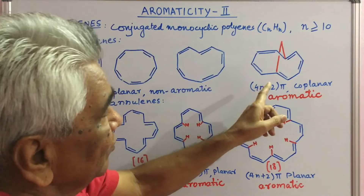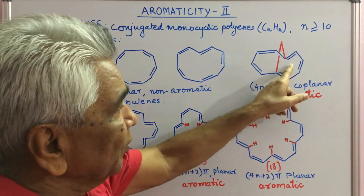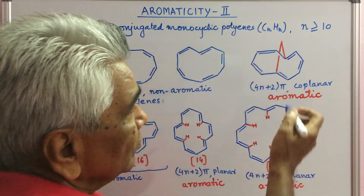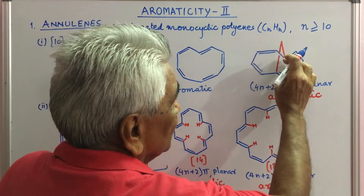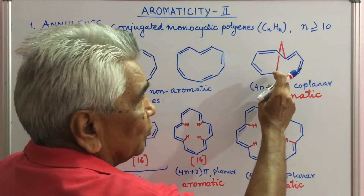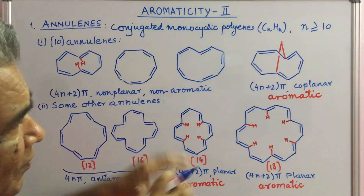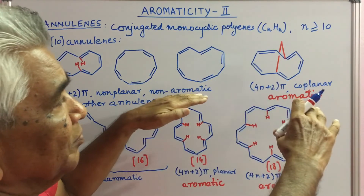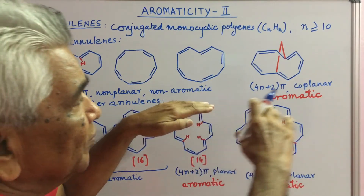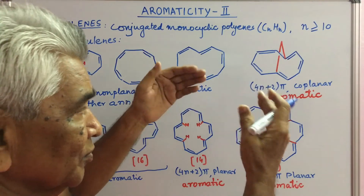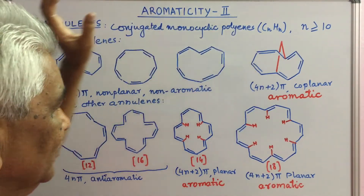Here, 4n+2 pi electrons are present — 10 pi electrons. This bridged system with a CH2 bridge at the 1 and 6 positions stabilizes the system and makes it planar. So this compound is aromatic.